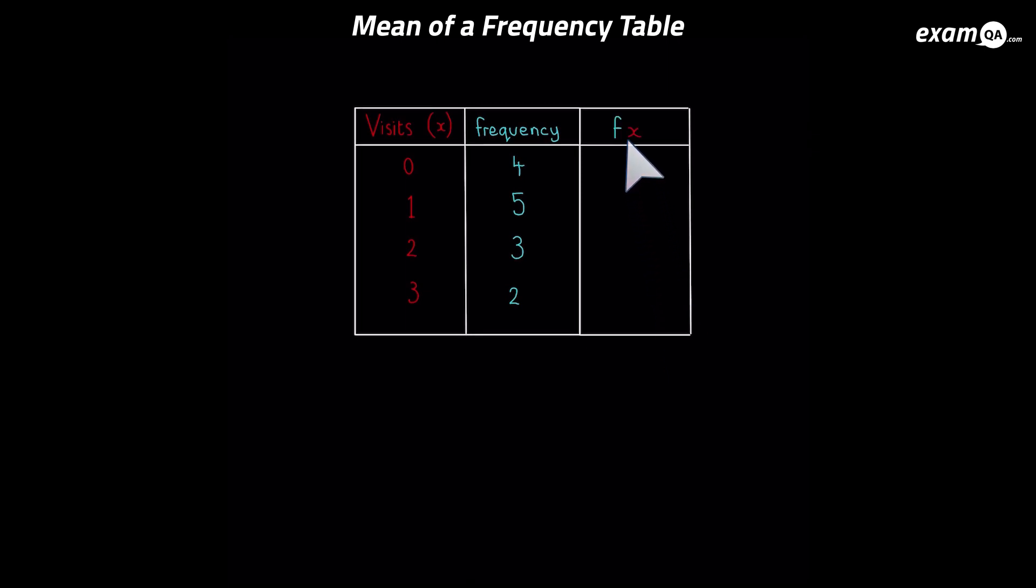So for example, the first one will be 4 times 0, which of course is 0. Then we're going to have 5 times 1, which is 5. And then 3 times 2, which is 6. And then 2 times 3, which is also 6. So we've worked out all the fx's.